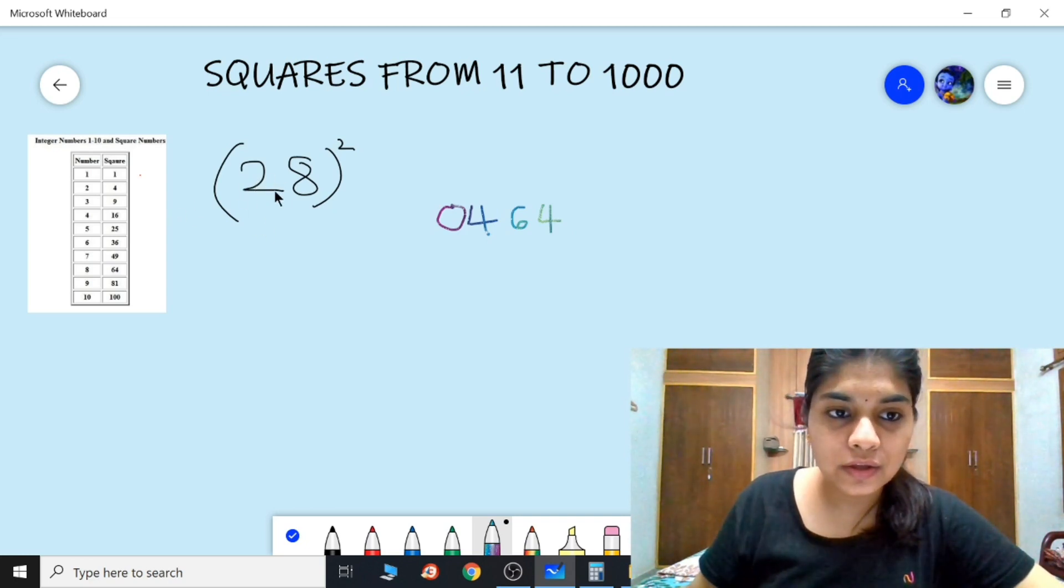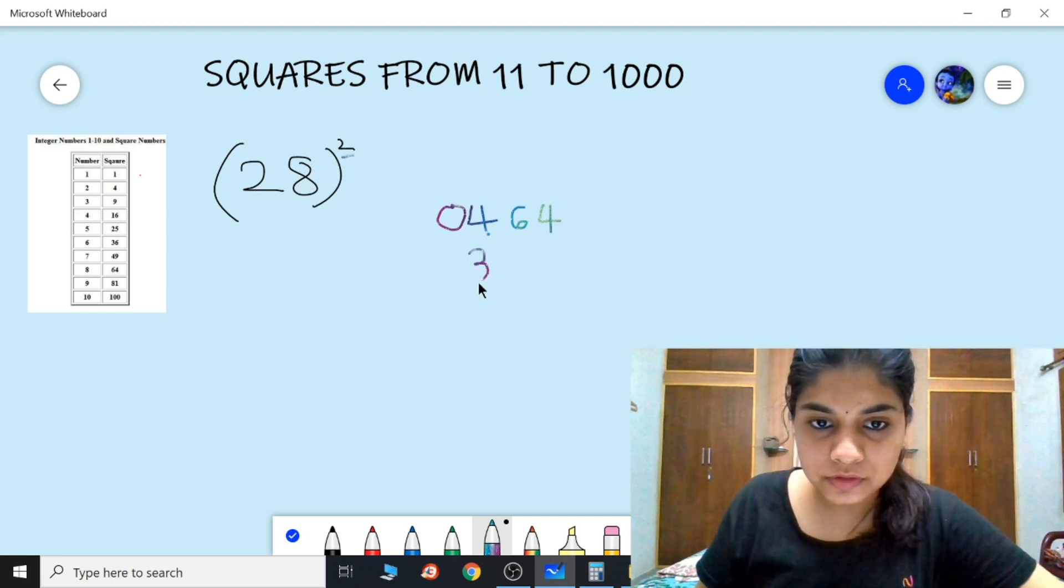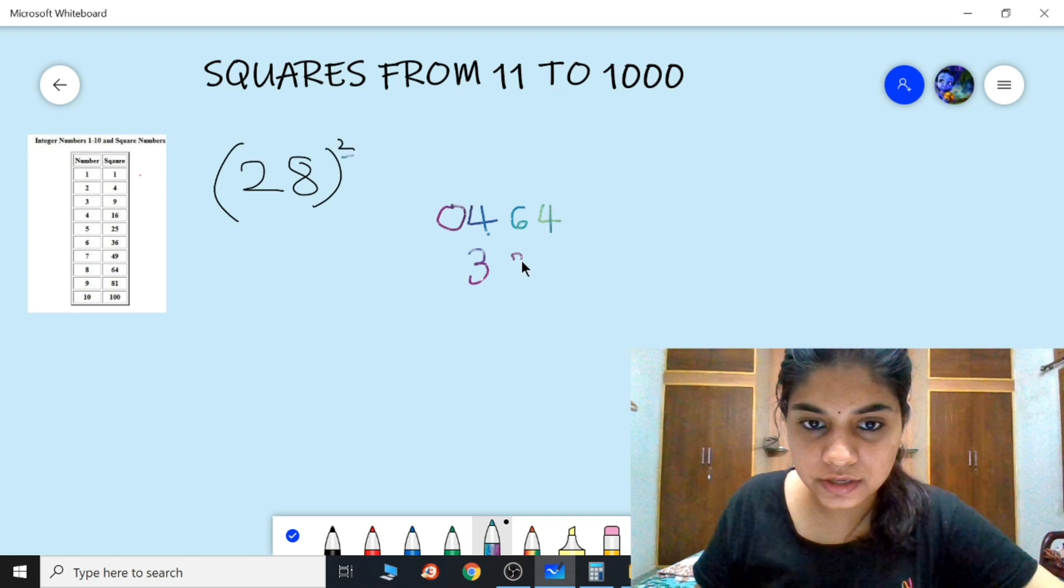Now what we need to do is multiply 2, 8, and 2. So 2 into 8 is 16, 16 into 2 is 32. We're writing 32 here, always leave a space in the right and then write the number.